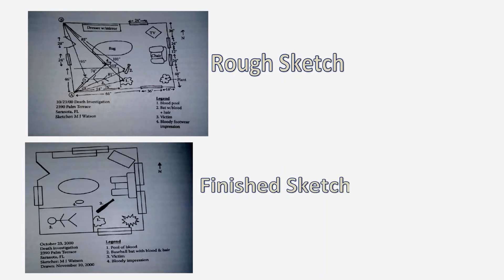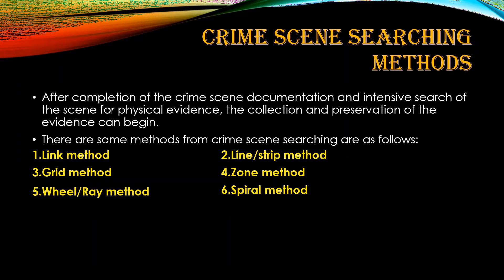Now the crime scene searching methods. After the completion of crime scene documentation, an intensive search of the scene for physical evidence and its collection and preservation can begin. The methods for crime scene searching are: the link method, the line or strip method, the grid method, the zone method, the wheel or ray method, and the spiral method.